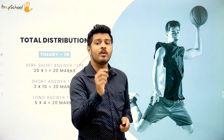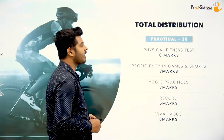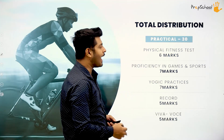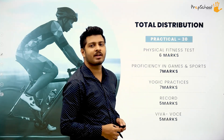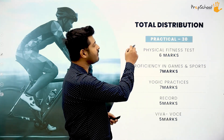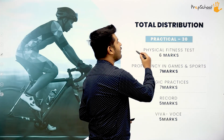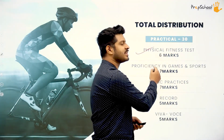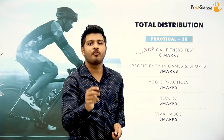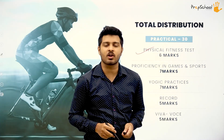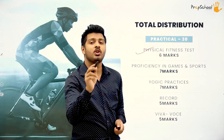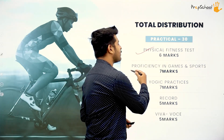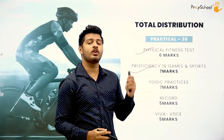Moving on to the practical side, you will have 30 marks in total divided into five different categories or tests. The first is the physical fitness test, which carries six marks. Your fitness will be tested on the field and based on your performance you will get marks out of six.